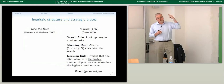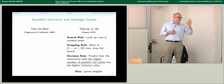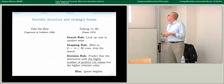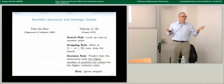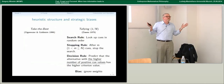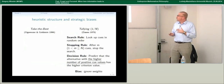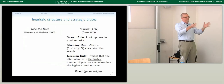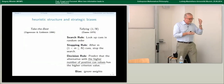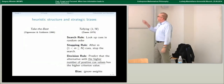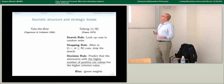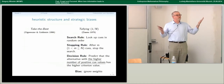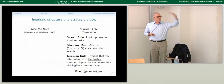The first heuristic is tallying, due to Robin Dawes — it's linear regression ignoring the weights. There are three components to a heuristic in Gigerenzer's school: a search rule, a stopping rule, and a decision rule. For tallying, the search rule uses all n cues in random order, the stopping rule is when you run out of the list, and the decision rule is to predict that the alternative — A or B — with the higher number of positive cue values has the higher criterion value.